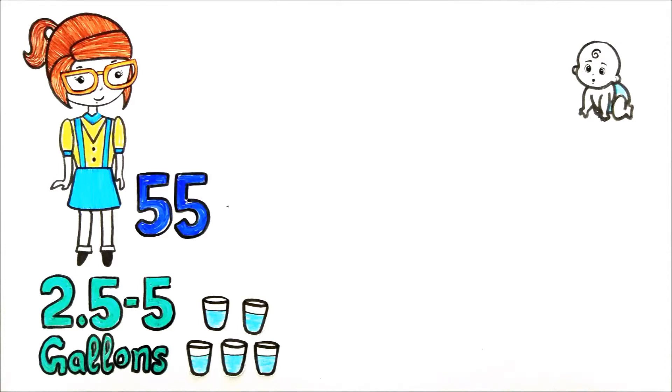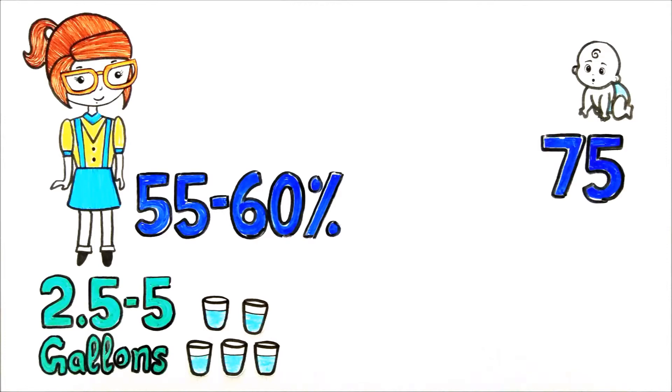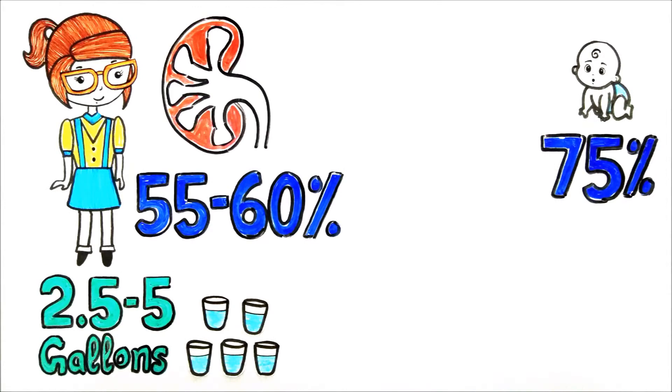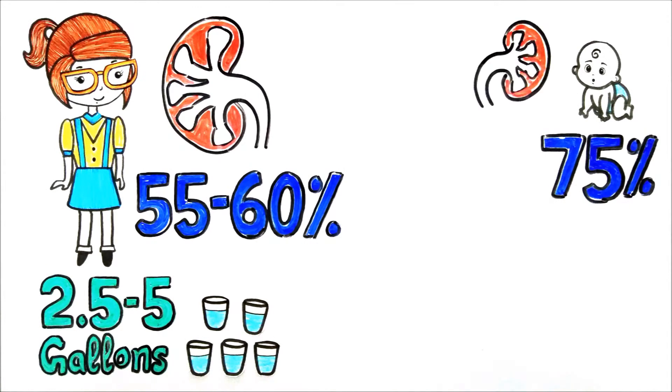While an average healthy adult is made up of 55 to 60% water, average baby, on the other hand, is roughly 75% water. On top of that, their kidneys are about half the size of an adult's and it's really hard for them to hold additional water.